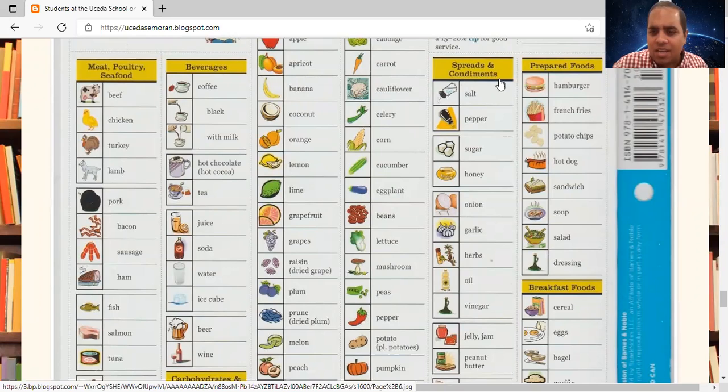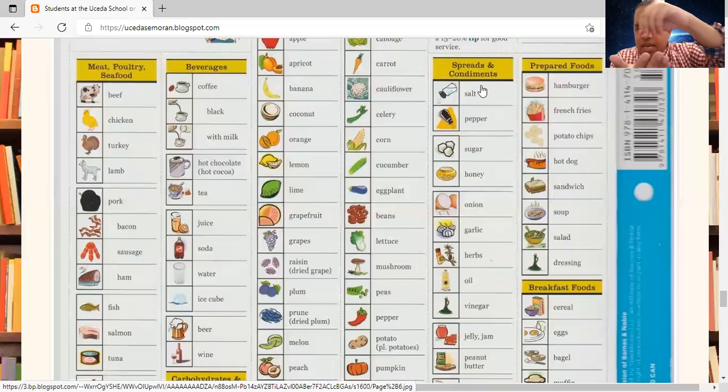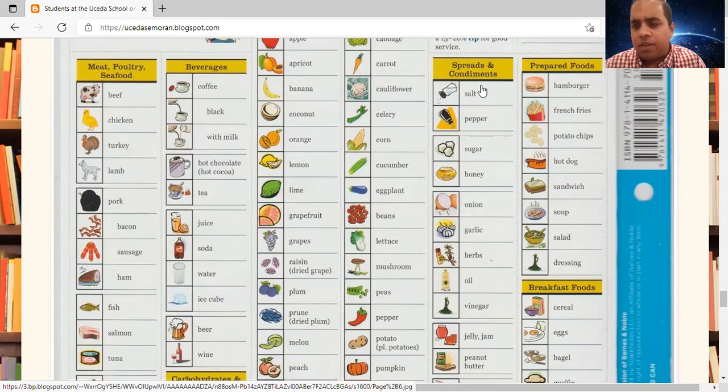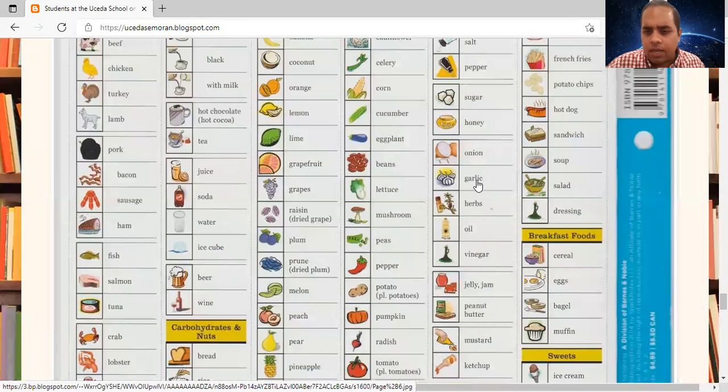Spreads and condiments. Spreads and condiments are anything extra you add on the food for flavors. For example, I put salt on my french fries. Salt. Pepper. Sugar. Honey. Onion. Garlic. Herbs. Oil. Vinegar.